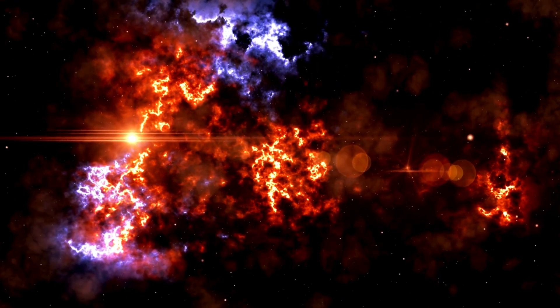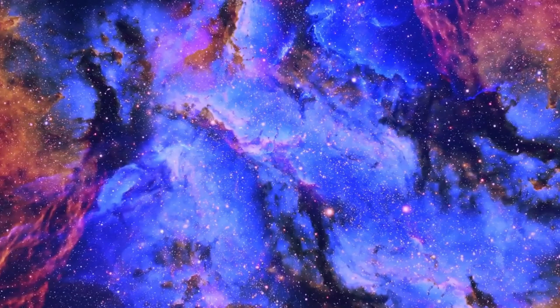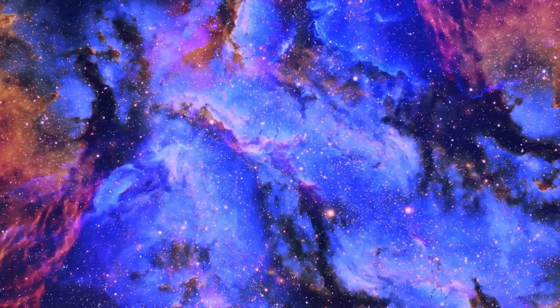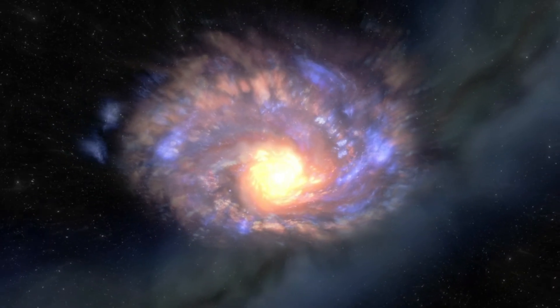But despite these severe conditions, Proxima B basks in the illumination of its small star, receiving enough sunlight to sustain Earth-like temperatures where water is in liquid form.